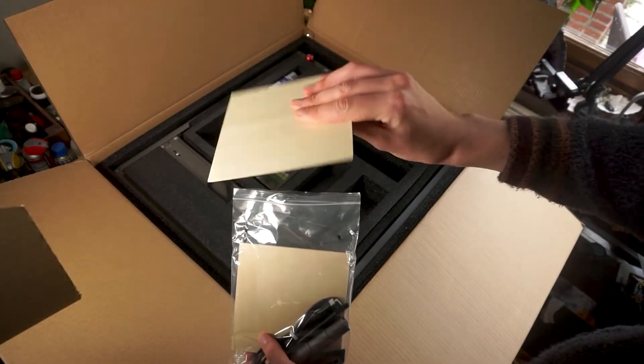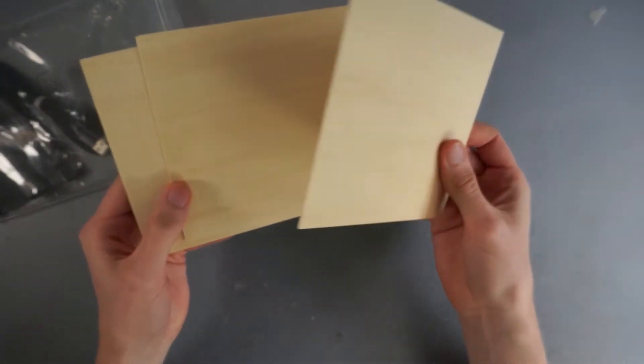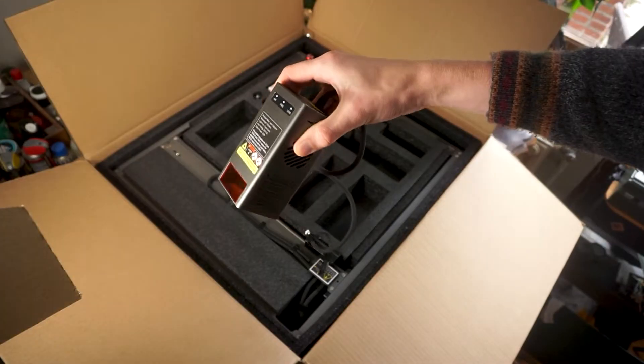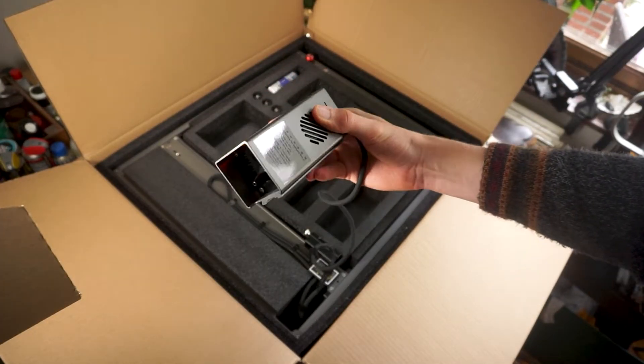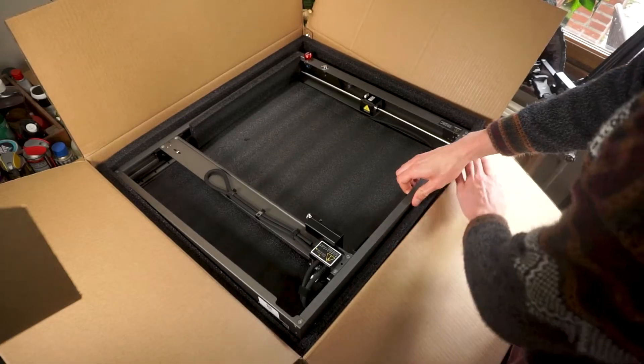Some 2mm plywood sheets for the first tests, some cheap safety glasses, and finally the machine with the laser heads as well as the cutter itself.